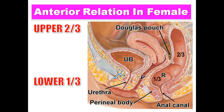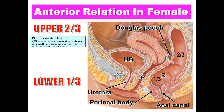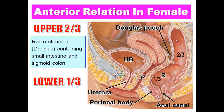Regarding the anterior relations in the female: this is the uterus and this is the vagina. The upper two-thirds are related to the recto-uterine pouch, also called the rectovaginal pouch or Douglas pouch, containing small intestine and sigmoid colon. The lower third is related to the vagina.